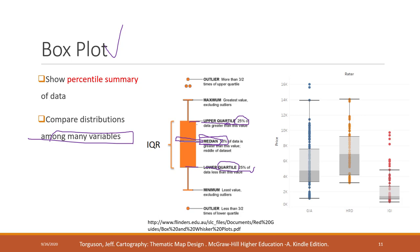The upper quartile means 25% of the data is greater than this value, and the lower quartile means 25% of the data is less than this value. The short lines indicate the maximum and minimum values. Pay attention that these maximum and minimum values do not count the outliers.